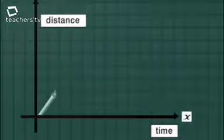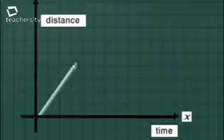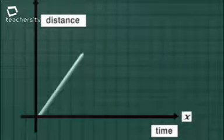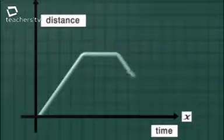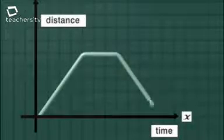A graph sloping upwards in this direction means you're travelling away. It's called a positive gradient. A horizontal line means you've stopped. A slope downwards in this direction means you're travelling back. It's a negative gradient.